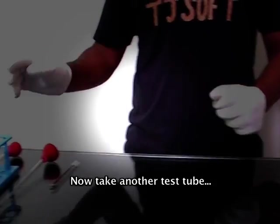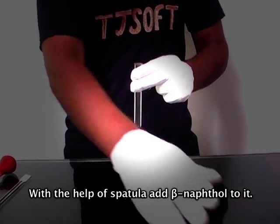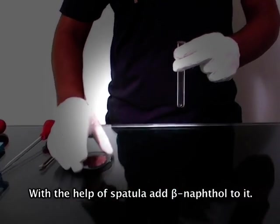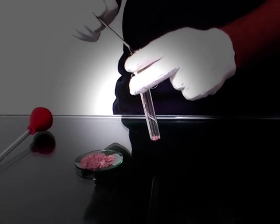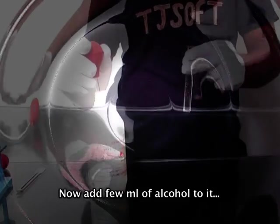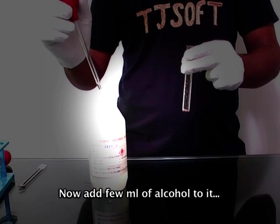Take another test tube. Using a spatula, add beta-naphthol to it. Now add a few ml of alcohol to it.